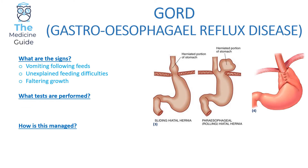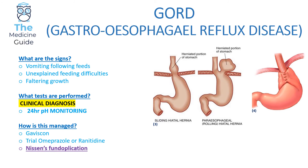In GORD, a child will vomit following a feed. Importantly, this vomiting is non-bilious — that's a key point to remember. The child will also have unexplained feeding difficulties and faltering growth; specifically, they'll be refusing to feed and gagging or choking after feeds. GORD is a clinical diagnosis, but 24-hour pH monitoring can support it. Initial management includes Gaviscon, followed by a trial of omeprazole (a proton pump inhibitor) or ranitidine (an H2 receptor antagonist).